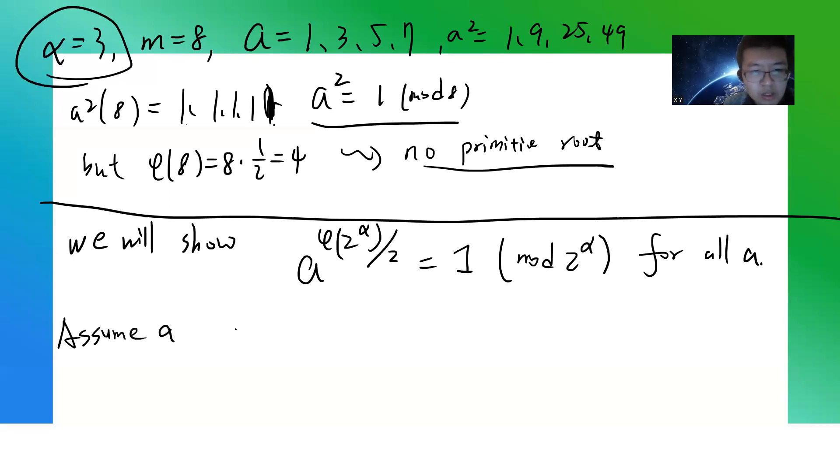Right, so this means this is correct. And we want to show that this implies the next level α + 1 is correct. Okay, so this means that a^(φ(2^α)/2) = 1 + 2^α·t.